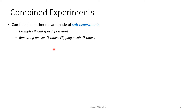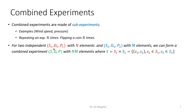For two experiments: the first experiment, referred to in red, has a sample space of possible outcomes S1, event omega-1, and associated probabilities P1. Let's say there are n possible outcomes for the first experiment. There is another experiment, referred to in blue, which also has n possible outcomes. The combined experiment, shown in green, will have n times n possible outcomes.